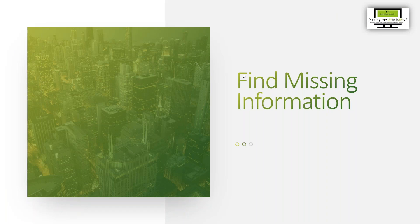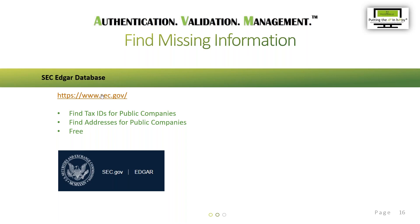Now let's talk about finding missing information. For the five-day vendor master file cleanup, I do offer an add-on service for vendor communication where I do the follow-up to find missing information since the initial cleanup is done. That really equates to the tax ID and the addresses. Since email addresses to reach out to vendors are scarce, I have found other tools to help with that. The first one is the SEC EDGAR database, where you can find tax IDs and addresses for public companies for free.